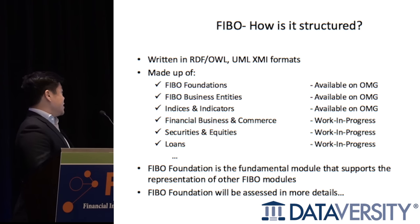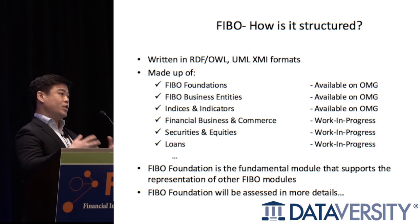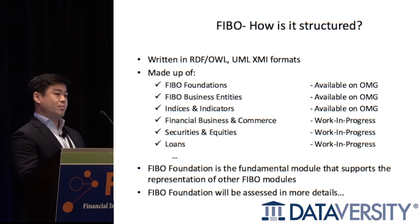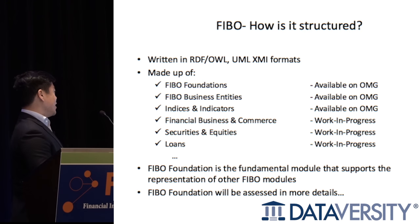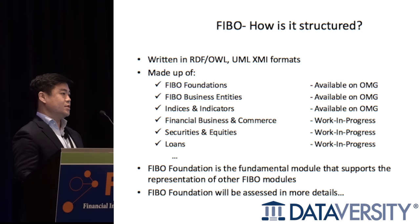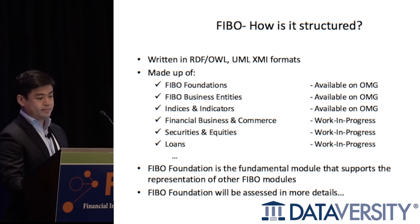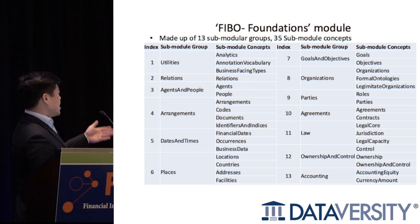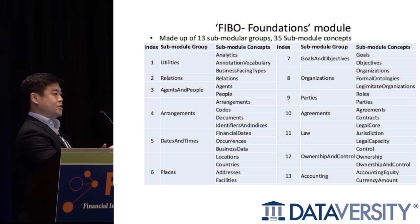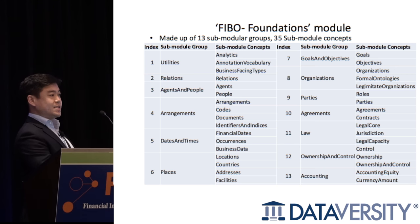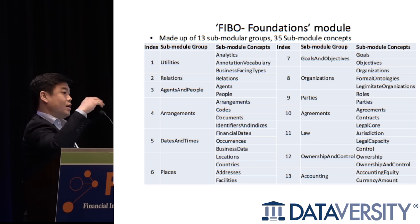FIBO is written in two formats — RDF/OWL and UML XMI — and is created in multiple modules, with independent groups working on different modules. Right now, three modules are posted as standards on the OMG website: FIBO Foundations, Business Entities, and Indices and Indicators. I'll be using the FIBO Foundations module to walk through the consistency and completeness check using Protégé and the Pitfall Scanner. The table shown here lists the sub-modular groups and concepts captured as part of the FIBO Foundations module — very elementary data elements necessary to describe higher-level FIBO concepts.